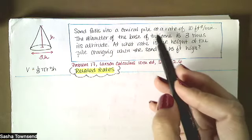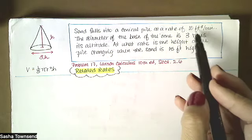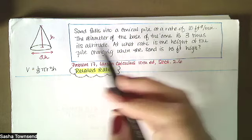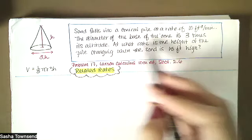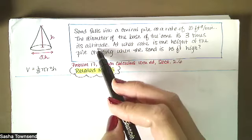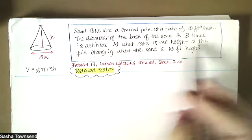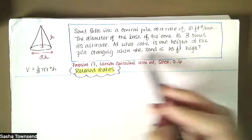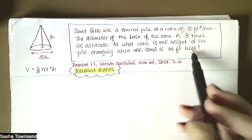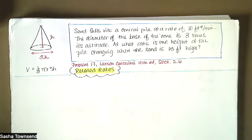Sand falls into a conical pile at a rate of 10 cubic feet per minute. The diameter of the base of the cone is three times its altitude. At what rate is the height of the pile changing when the sand is 15 feet high?